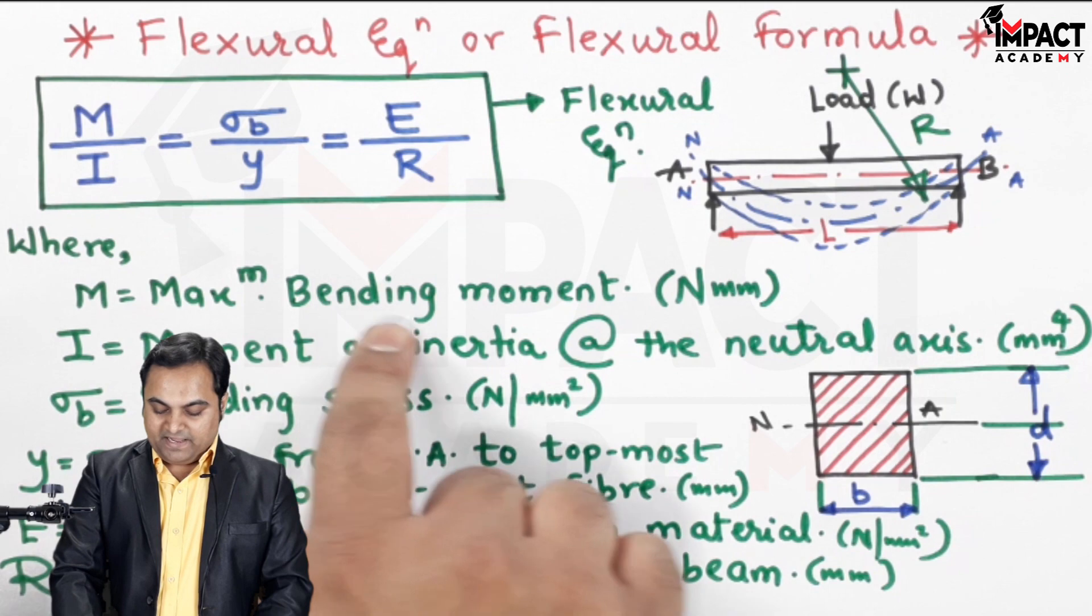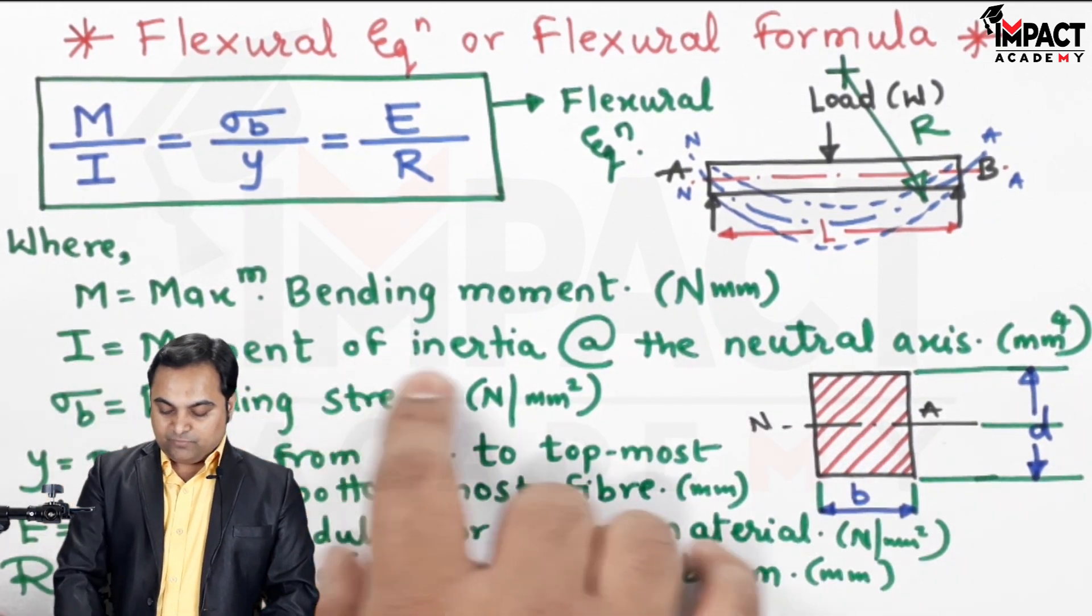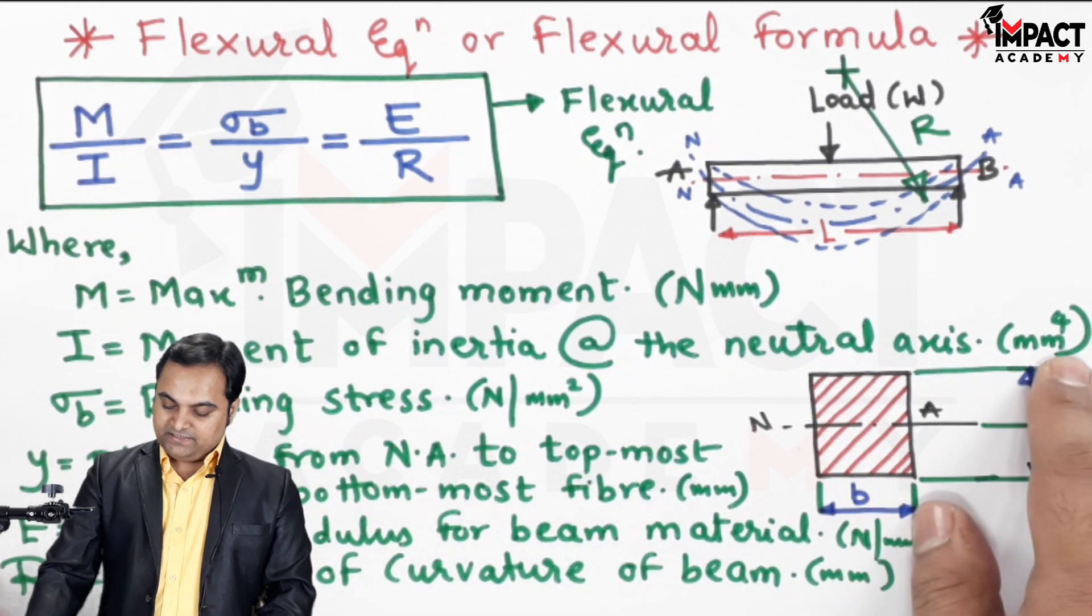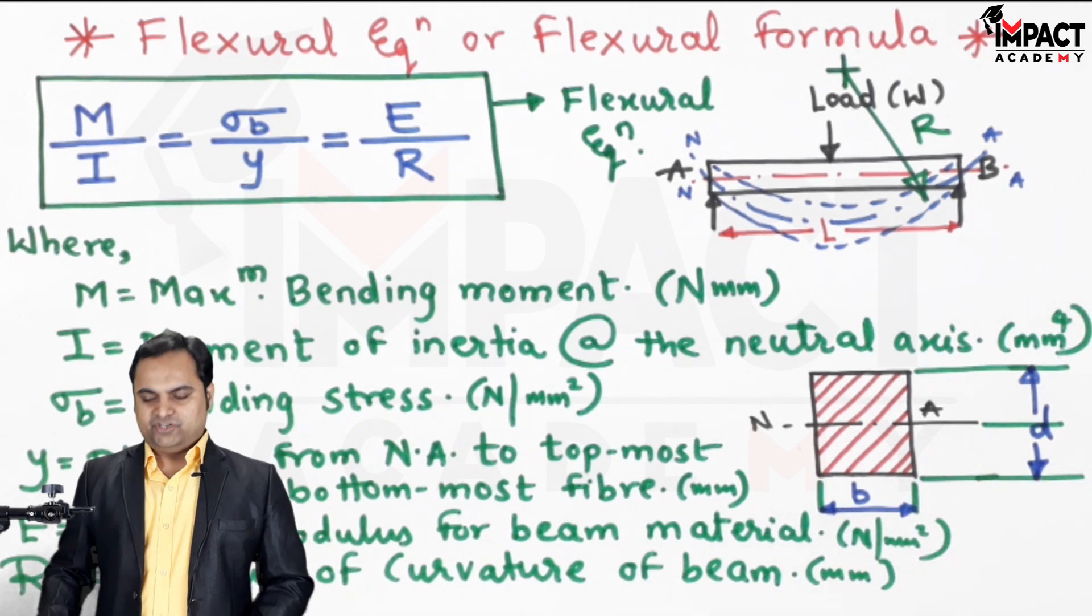M is the maximum bending moment in Newton-mm. I is the moment of inertia about the neutral axis in mm^4. The cross section may vary; here I am taking an example of a rectangular cross section.